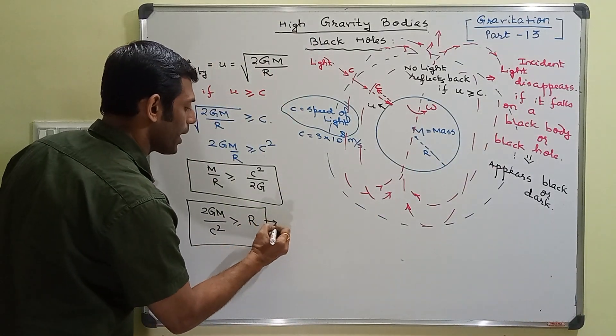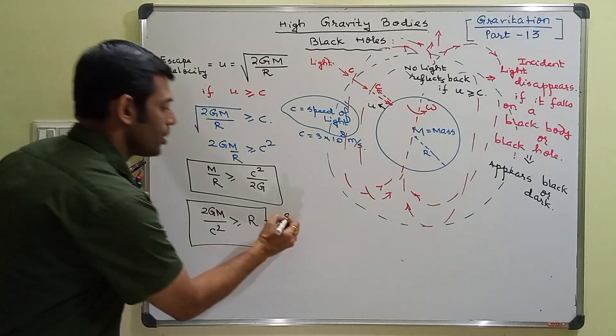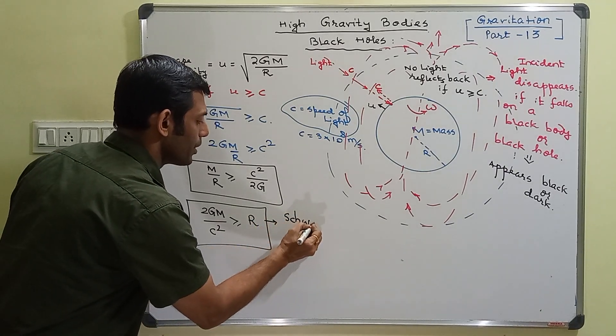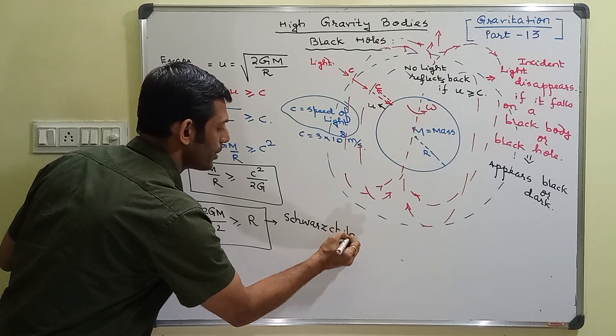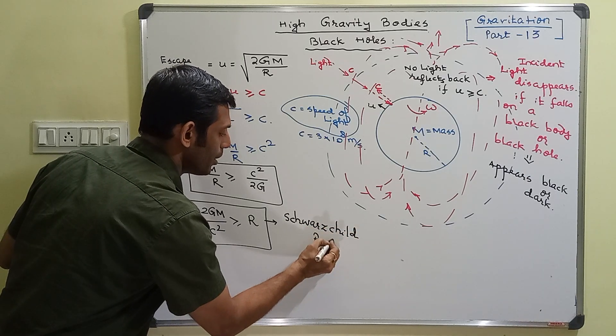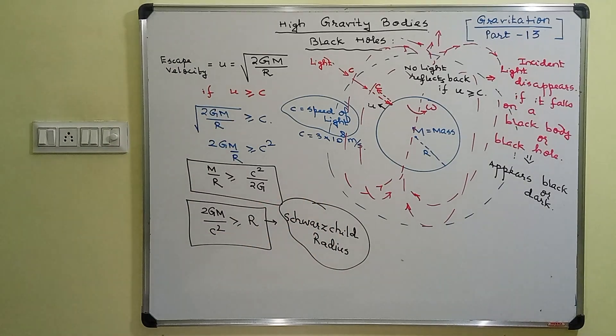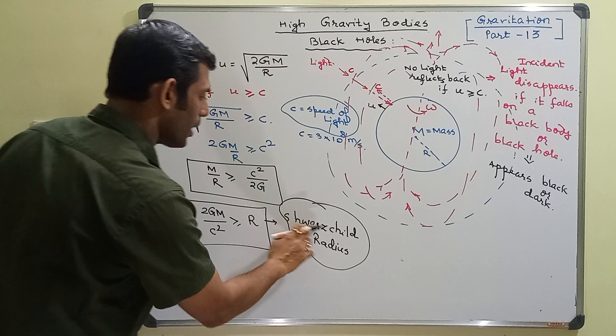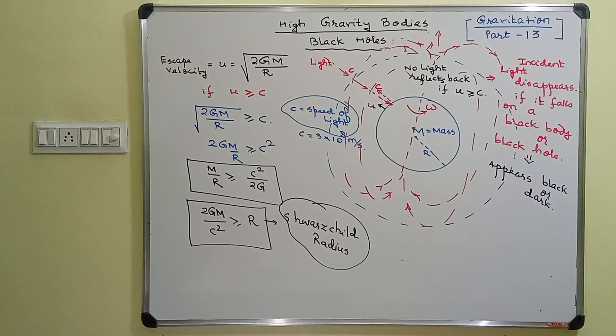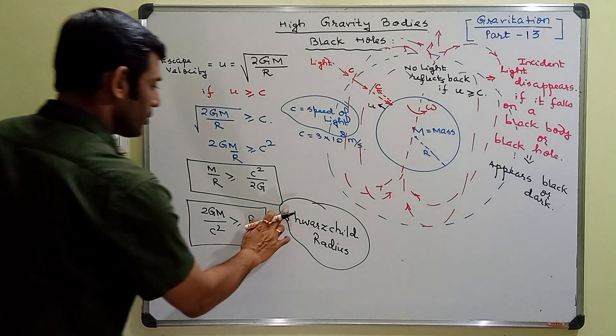Such a radius is called the Schwarzschild radius. If my spelling might have a mistake, but this is what it is called. Let me check it. Oh yes, I made a small mistake. It is SCHWARZ. Schwarzschild radius.